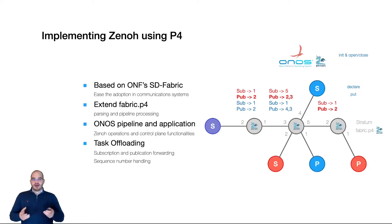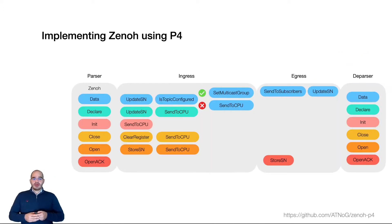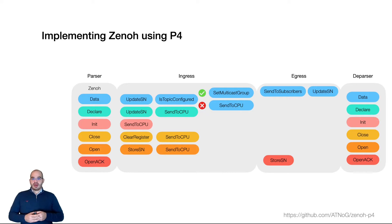We defined a set of actions, tables, and rules that allow, when the publisher sends a resource into the network, the results to be forwarded solely based on forwarding plane rules towards the interested subscribers. The resulting pipeline looks like this — you can see all the supported packets and how they are processed. We encourage you to visit our paper or our open source release of the code if you want to take a deeper look into how we handle these packets.